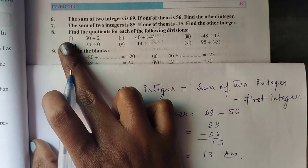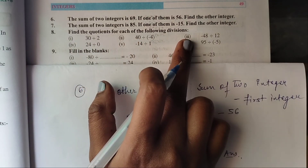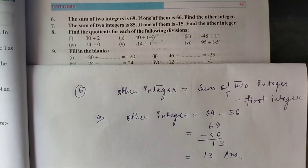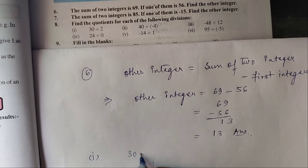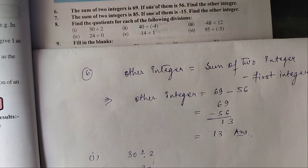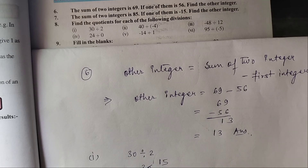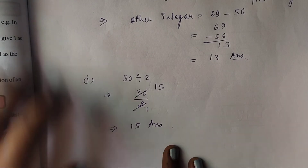Question 8: find the quotients for each of the following divisions. Question 1: 30 divided by 2. Two 1s are 2, two 5s are 10, so 15 is your answer.